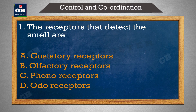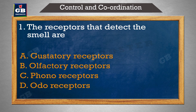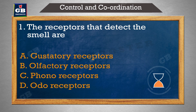The receptors that detect the smell — smell ka pata lagane waale receptors hai: a) gustatory receptors, b) olfactory receptors, c) phonoreceptors, d) odoreceptors.